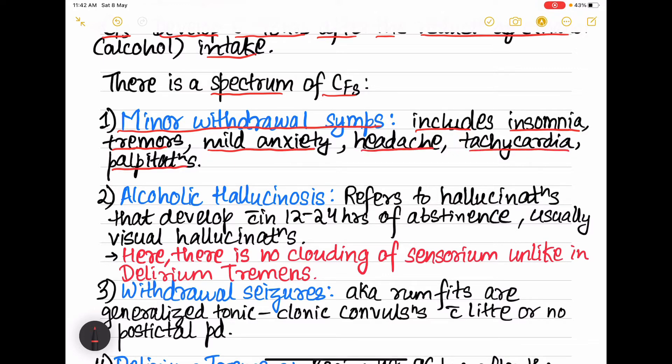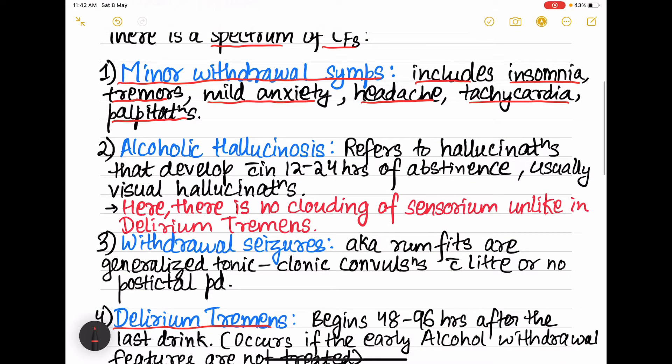Next is alcoholic hallucinosis. It refers to hallucinations that develop within 12 to 24 hours of abstinence, that is stopping the alcohol. Usually these hallucinations are visual hallucinations.